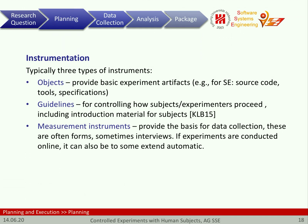Then there are so-called measurement instruments that provide the basis for data collection. Often these are forms — paper forms or online forms. If experiments are conducted online, data collection can be partly automatic, for example by instrumenting a tool. If we are interested in the execution of a business process through a tool, we may measure what steps are done, how much time passes between button clicks, and which buttons are clicked in which order — all automatically collected as measurement instruments.